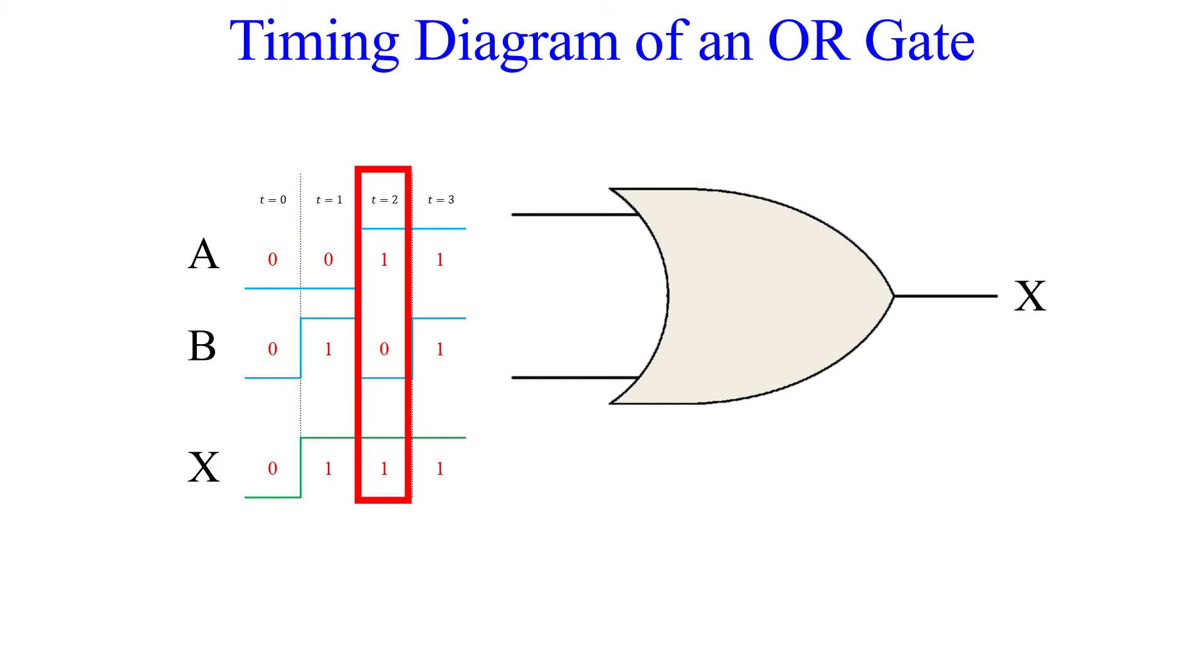At t equals 2, A is high and B is low. And at t equals 3, both inputs A and B are high. You can see that the only place the output is low is at t equals 0.